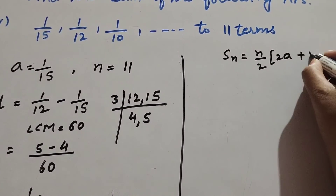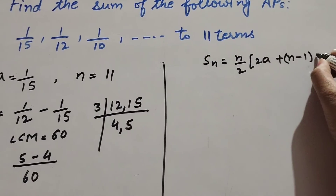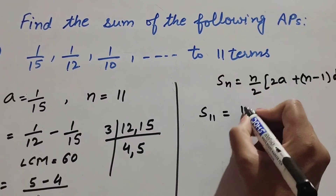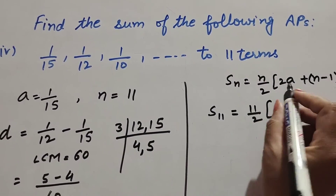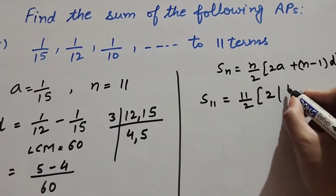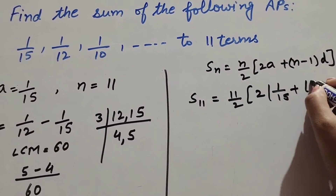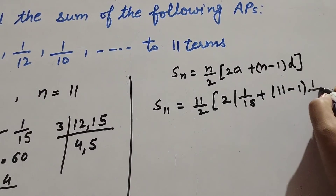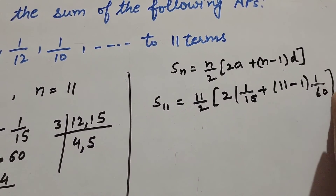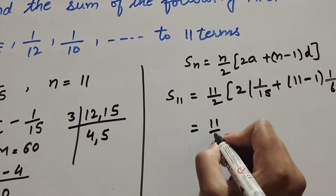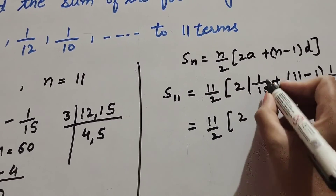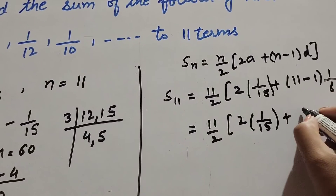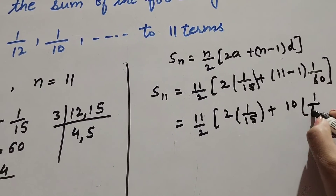S₁₁ = 11/2 × (2×(1/15) + (11−1)×(1/60)) = 11/2 × (2/15 + 10/60). Simplify 10/60 = 1/6. Taking 2 as common factor: 11/2 × 2 × (1/15 + 5/60). Cancel the 2s, giving 11 × (1/15 + 1/12).